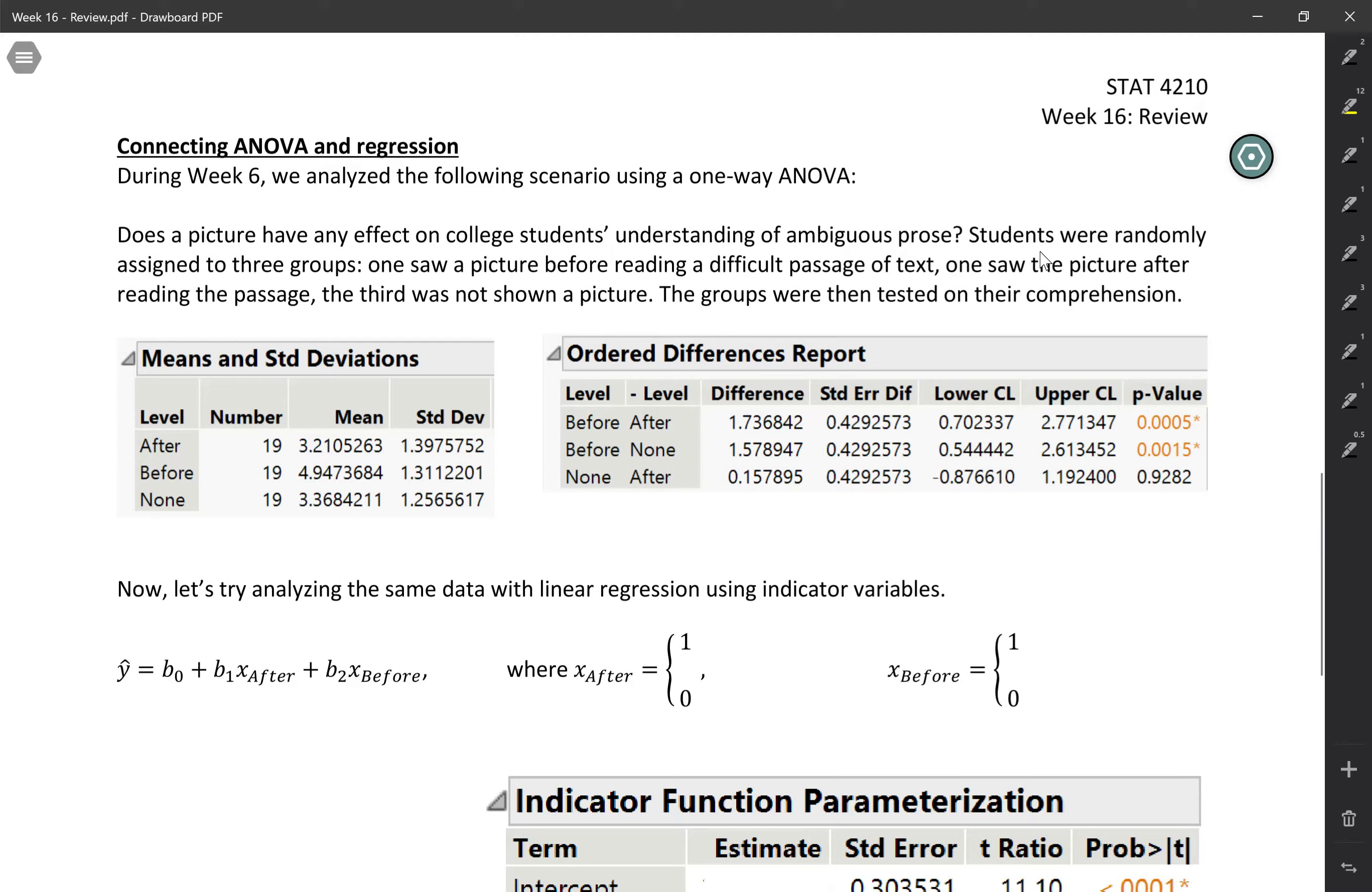In this video, we're going to draw explicit connections between ANOVA and regression by revisiting a data set that we first analyzed with ANOVA, and we're going to come back and look at it this time with regression. So in this scenario, we asked, does a picture have any effect on college students' understanding of ambiguous prose? Students were randomly assigned to three groups. One saw a picture before reading a difficult passage of text, one saw the picture after reading the passage, and the third was not shown a picture at all. And then the groups were tested on their comprehension.